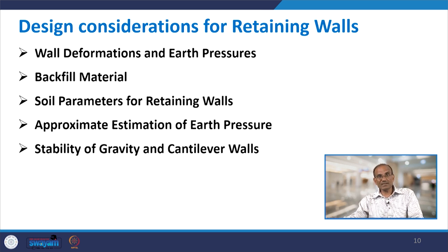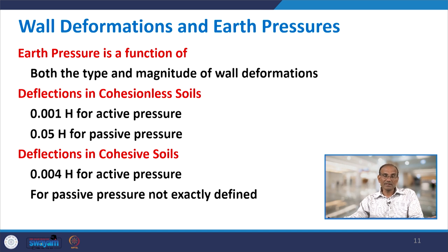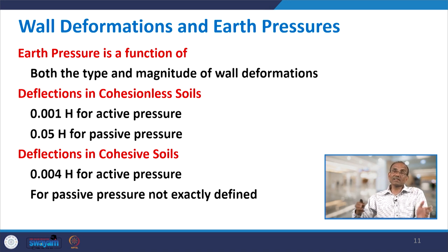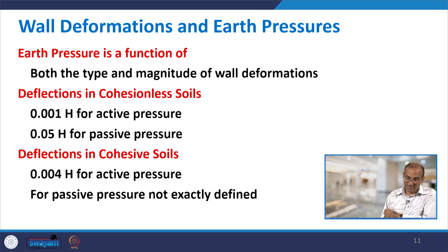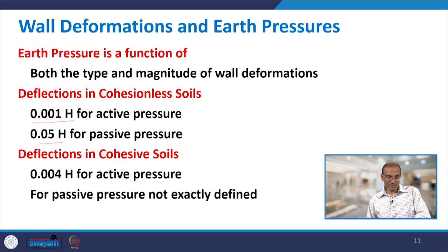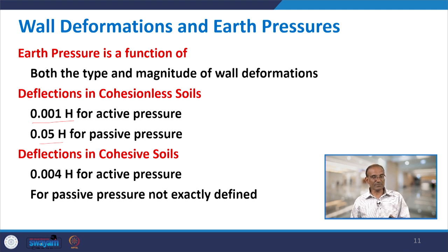Earth pressure is a function of both the type and magnitude of wall deformations. In cohesionless soils, the deflection for active pressure is about 0.001 times the wall height h, while for passive pressure it is 0.05 times h — significantly more movement is needed to mobilize passive pressure. In cohesive soils, the value for active pressure is 0.004h, and passive pressure is not defined as precisely.